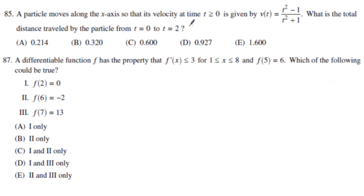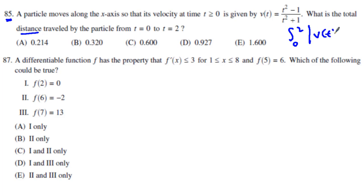Number 85 — use your calculator. We know the velocity-time function is t squared minus 1 over t squared plus 1, and we want the distance from 0 to 2. Distance is scalar, so in your calculator integrate the absolute value of that function from 0 to 2 with respect to t. The absolute value button is next to the number 9 on your calculator.